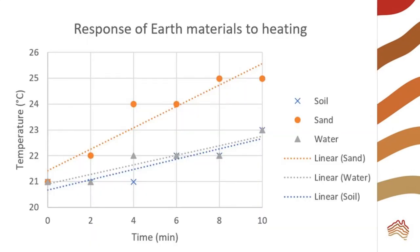The graph shows that sand heated up the most, so it has the lowest specific heat capacity. Soil and water are similar. They have a higher specific heat capacity.